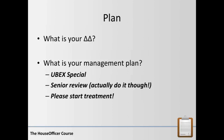Now we come to the plan. As a medical student you might write one differential and a couple of bits. But now you need a major primary diagnosis, maybe one or two differentials, and a good management plan. You always get the first few points for free - that's the UBEX special. This is a list of things you do for pretty much any patient acutely admitted to hospital. U is for urine - including a pregnancy test if relevant. B is for blood tests, both venous and arterial if relevant. E is for ECG. X is for X-ray.